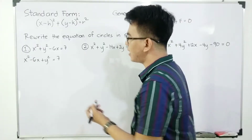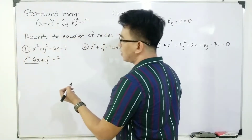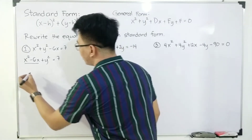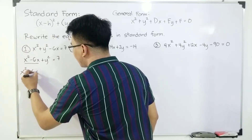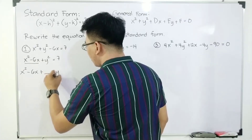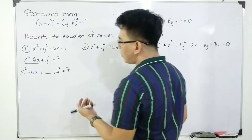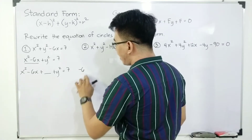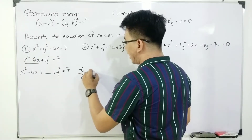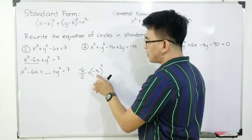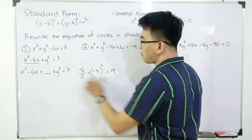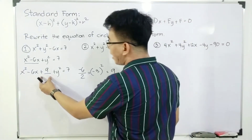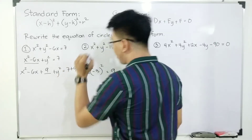Since we have two terms for the variable x, we will do completing the square to make it a perfect square trinomial. We have x squared minus 6x plus blank, plus y squared is equal to seven. To fill in the blank, get the coefficient of 6x, which is negative six, divide it by two to get negative three, then square it: negative three squared equals nine. So we add nine to both sides to keep the equation balanced.